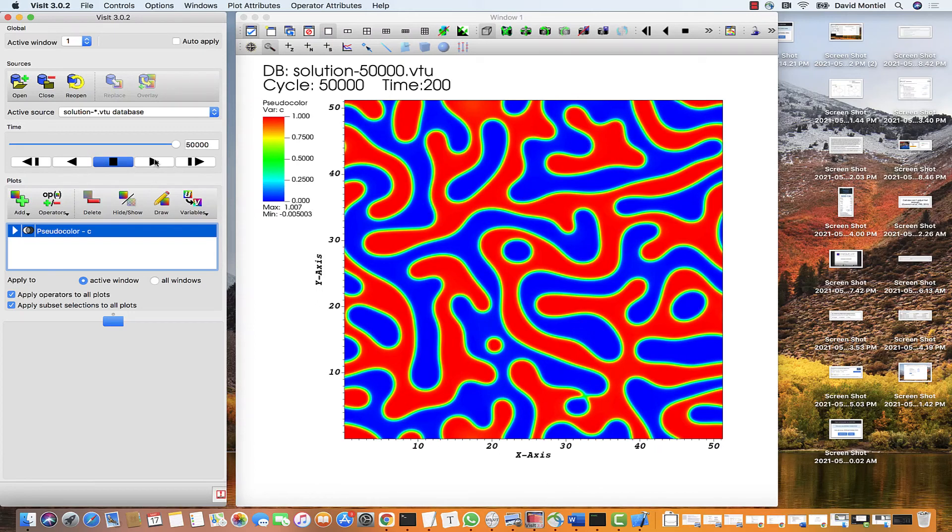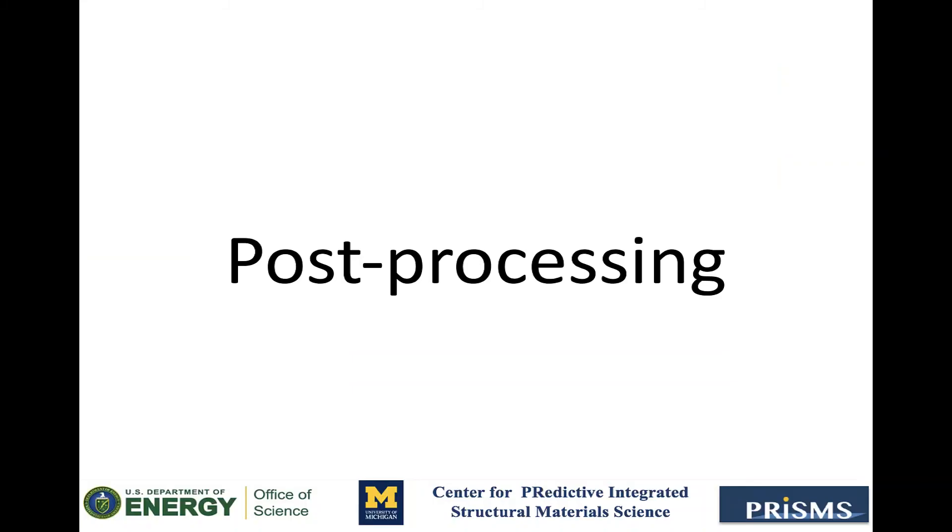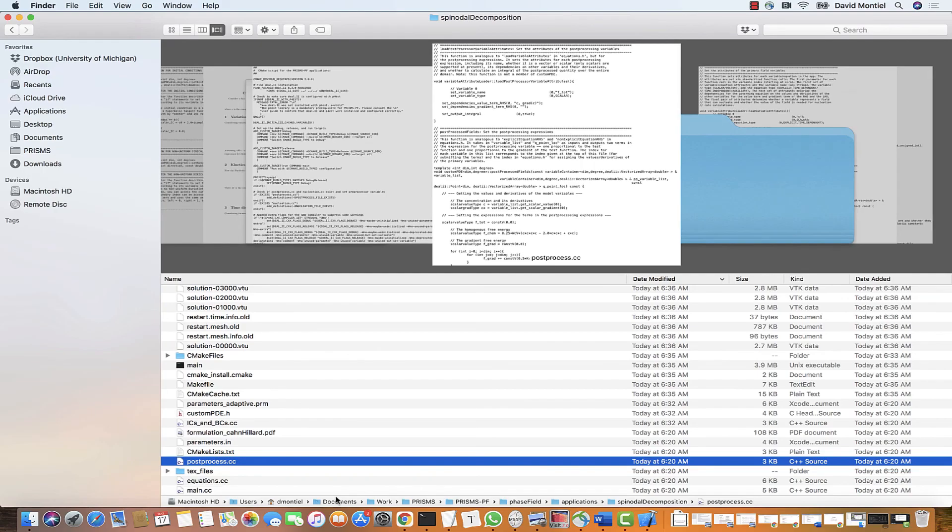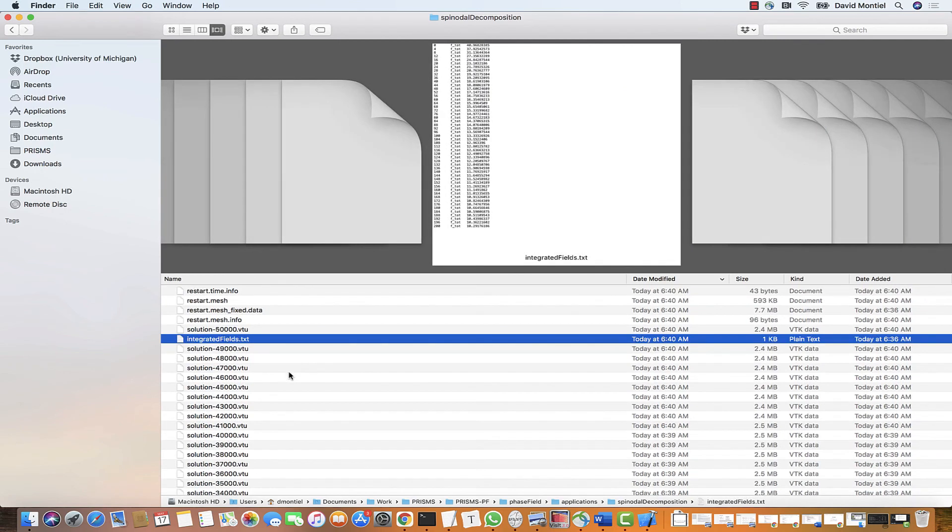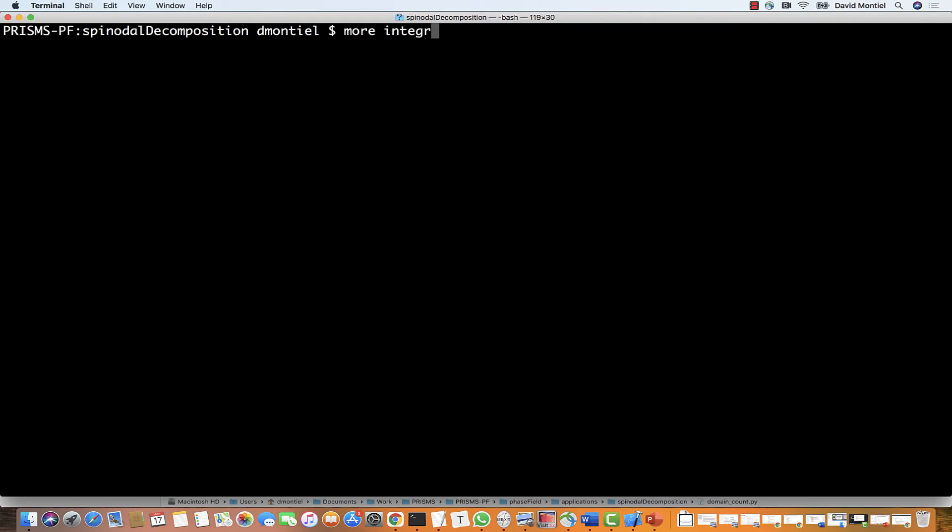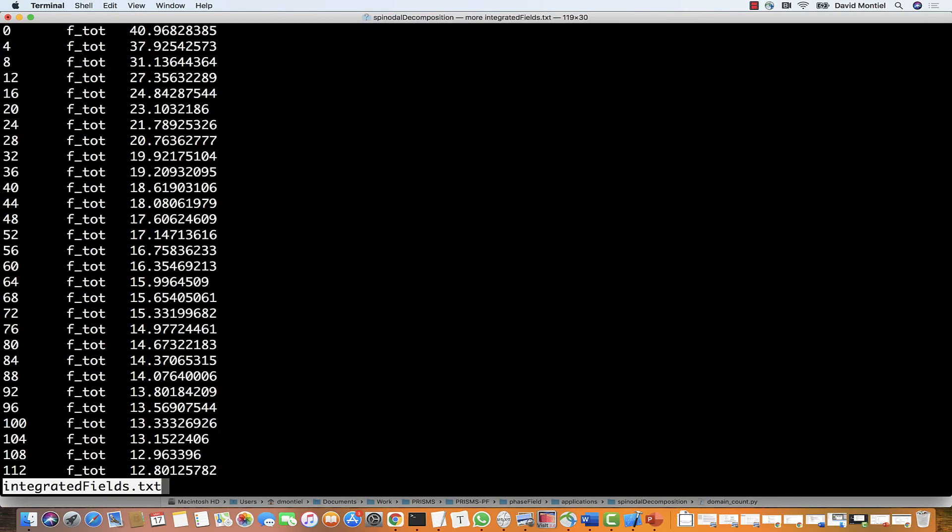Now I would like to show you some of the information that you can extract from the results other than pretty pictures. First, we're going to analyze an output directly calculated by prism.pf in the file postprocess.cc, which is this file, integratedfields.txt. This file contains the total free energy of the system as a function of simulation time. And it is calculated as the space integral of the local free energy.